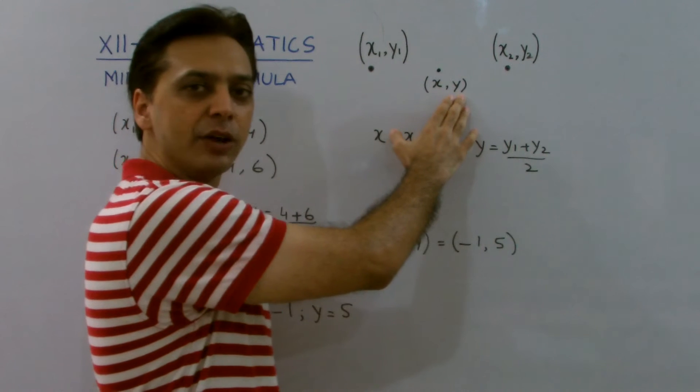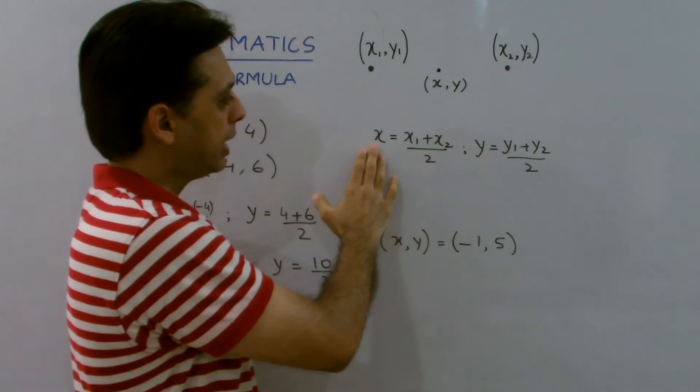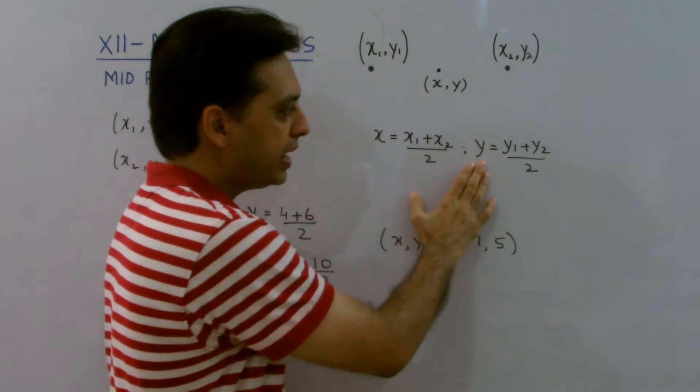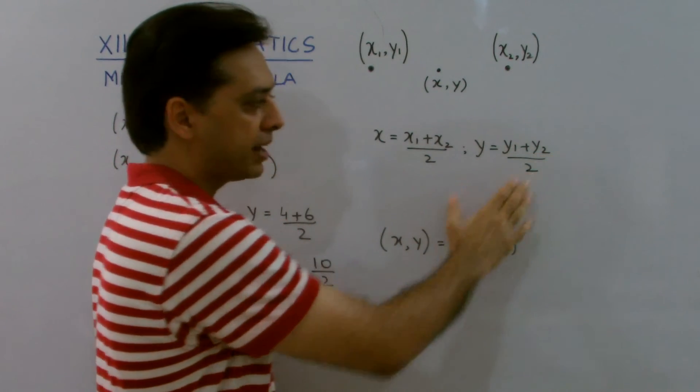I can find the value of x and y using the formula: x = (x1 + x2)/2 and y = (y1 + y2)/2.